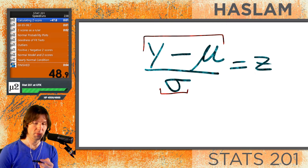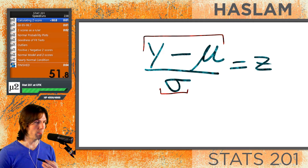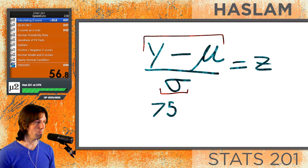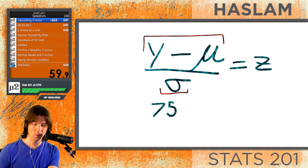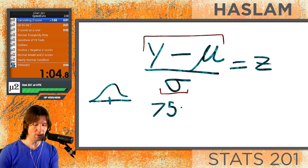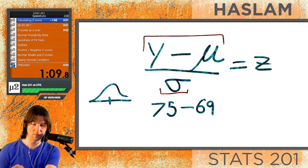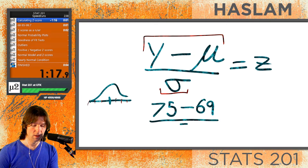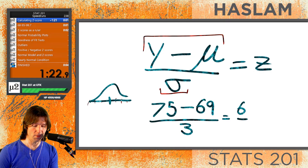Let's see this in action. We could take someone's height — maybe they say they are 75 inches tall. We need to know the mean of the distribution, which might be 69, and the standard deviation, which might be 3. So all we do is take the difference of 6 and divide it by 3.